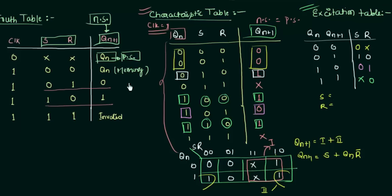This is all for the characteristic table and the excitation table of the SR flip flop. When we do flip flop conversion and design of counters, you will find out how these tables are used. See you in the next presentation when we will discuss the D flip flop.